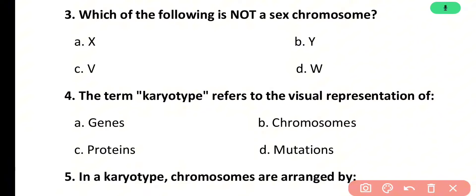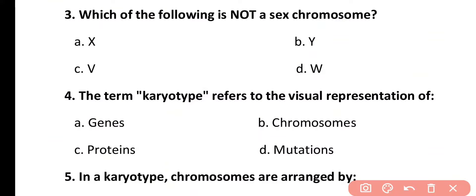Question number 3. Which of the following is not a sex chromosome? Options: X, Y, V, W. Correct answer is option C. V is not a sex chromosome. X and Y are sex chromosomes, and W is also a sex chromosome found in birds.